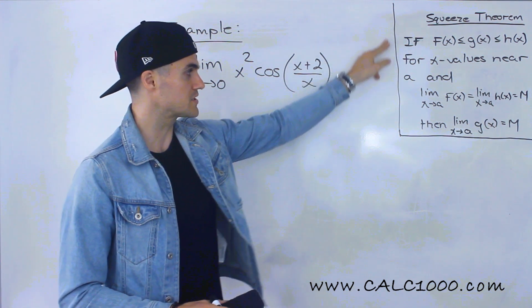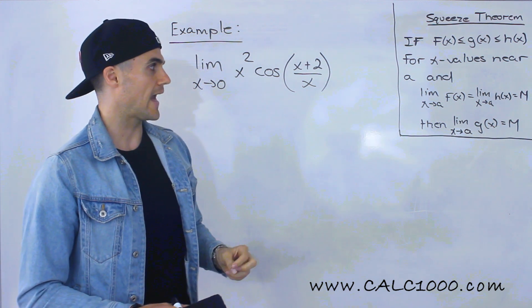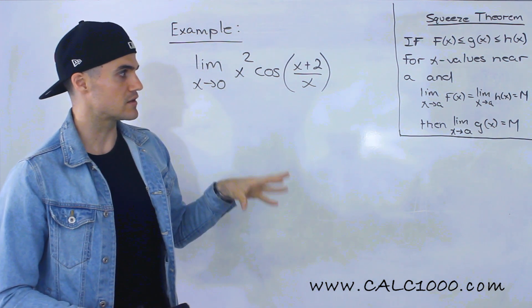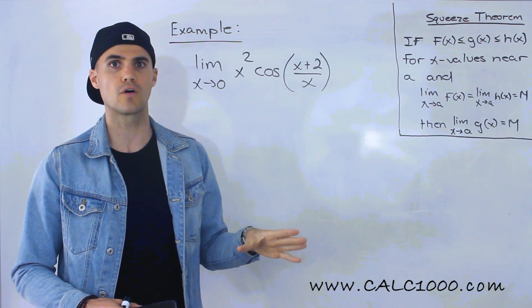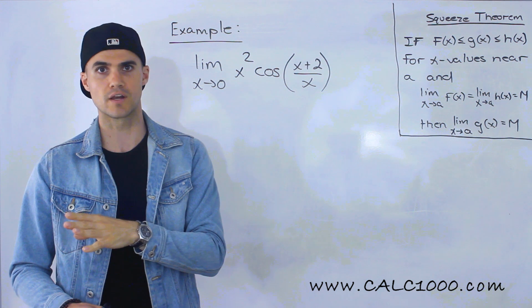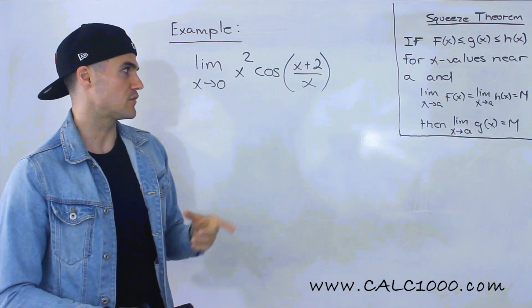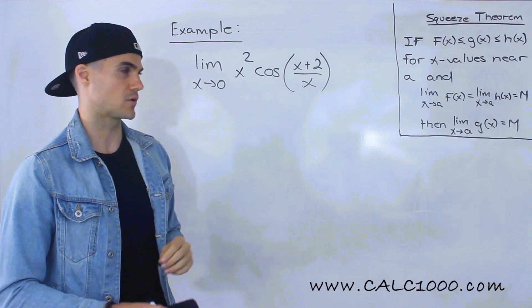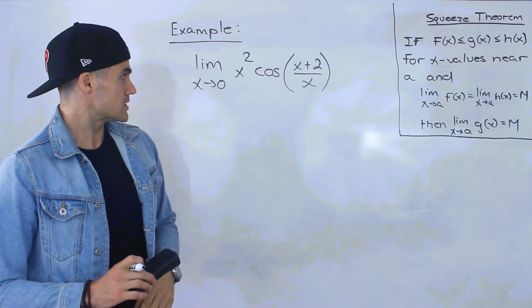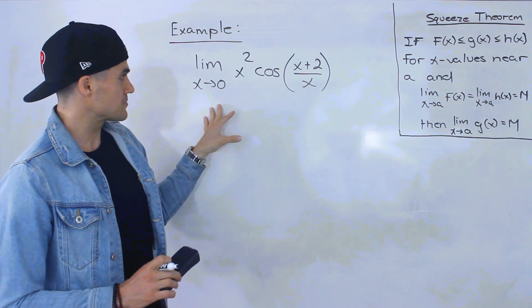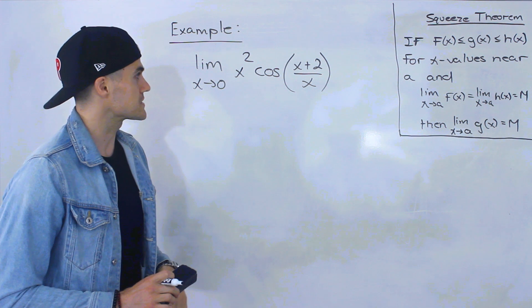I've rewritten the squeeze theorem over here so we can refer to it throughout the question. I'll be solving this with the assumption that you've already watched the squeeze theorem overview video. If you haven't watched that video, make sure you do before watching this one or you might get a little bit confused. So we have the limit as x approaches 0 of x squared times cos(x + 2) all over x.